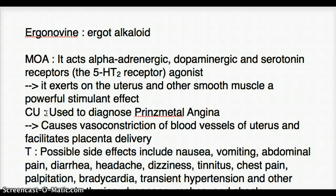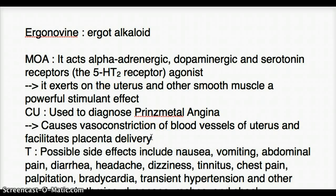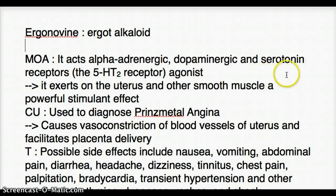There is another clinical use of Ergonovine: it causes vasoconstriction of the blood vessels of the uterus and facilitates placental delivery. By vasoconstricting the blood vessels during placental delivery, it causes less blood loss. The reason it causes vasoconstriction is the same reason it is used to diagnose Prinzmetal angina — increased serotonin and alpha-adrenergic agonism.